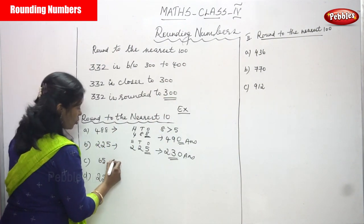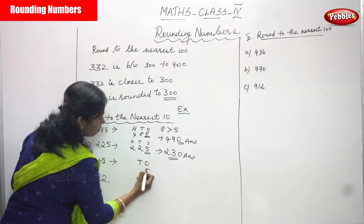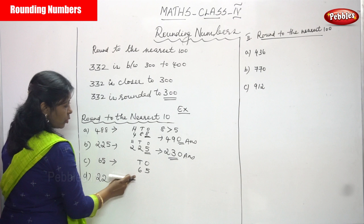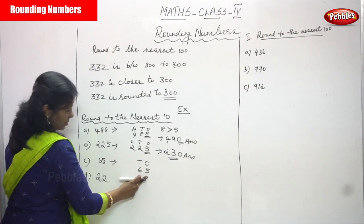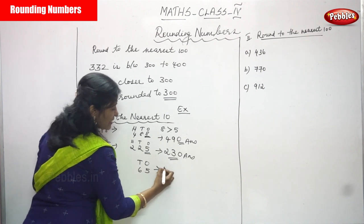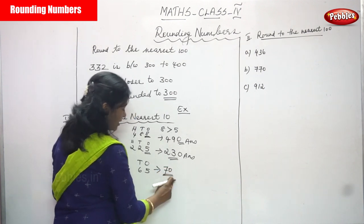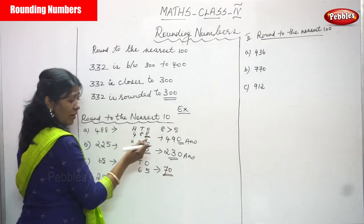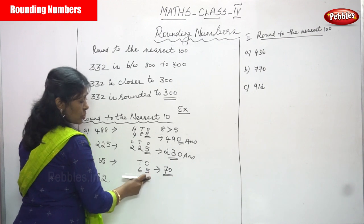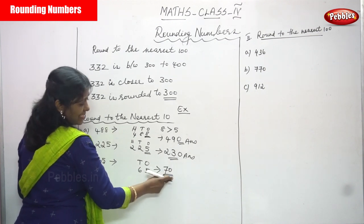Next: 65. This is also a midway point. We have 10's place 6 and 1's place 5 — that is 65. Consider the 1's place, which is 5. This is the midway point, so it becomes 70. Because 5 and greater than 5 means you consider the next large number. 65 is closer to 70, so rounded to the nearest 10 is 70.